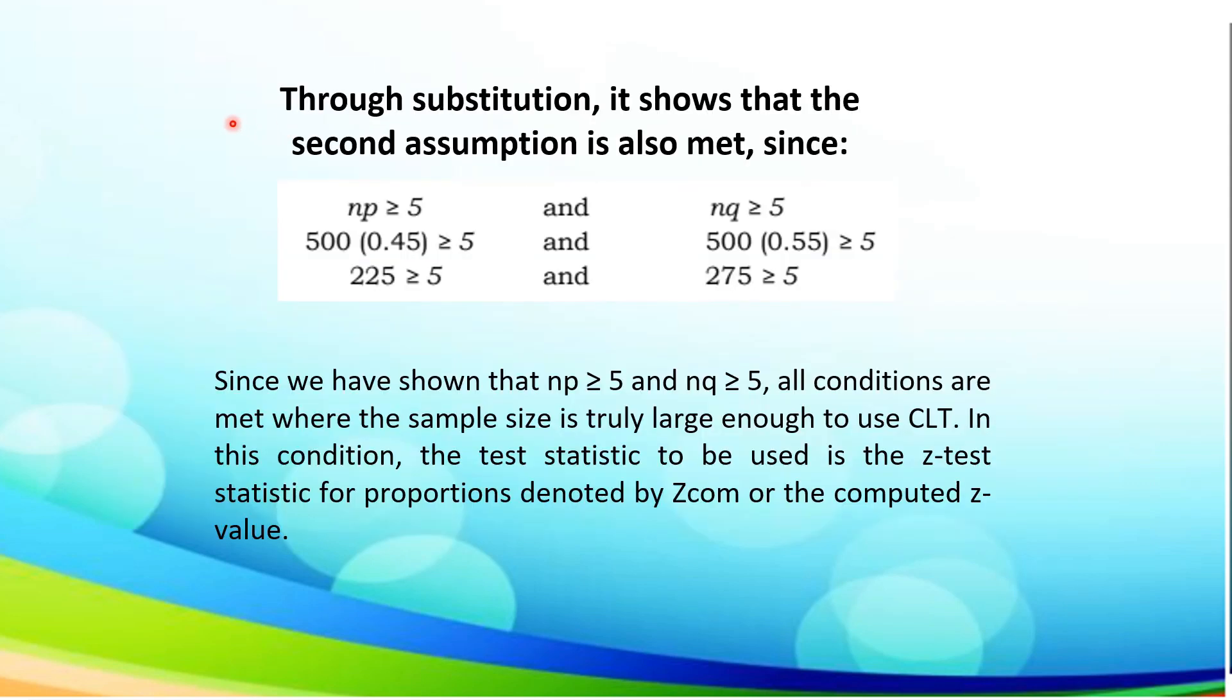Through substitution, it shows that the second assumption is also met, since np or the sample times the proportion is greater than or equal to 5, which is 500 times 0.45 which is 225, and 500 times 0.55 which is q, which is 275, is greater than or equal to 5. Since we have shown that np is greater than or equal to 5 and nq is greater than or equal to 5, all conditions are met where the sample size is truly large enough to use CLT, the central limit theorem. In this condition, the test statistic to be used is z-test statistic for proportion denoted by z-com or the computed z value.